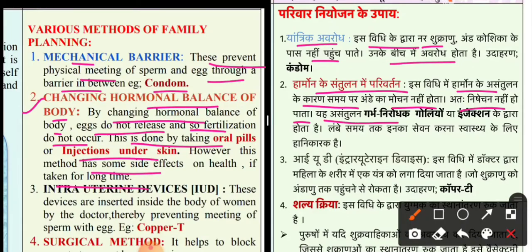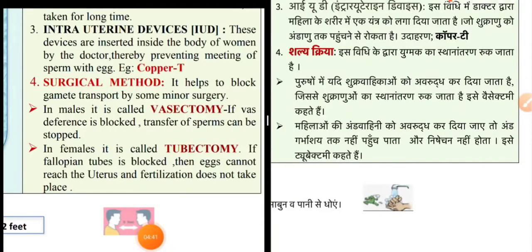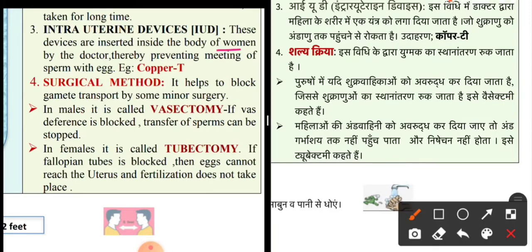Third is intrauterine devices — devices placed inside the body of the woman by a doctor, thereby preventing the meeting of sperm with egg. For example, copper-T.